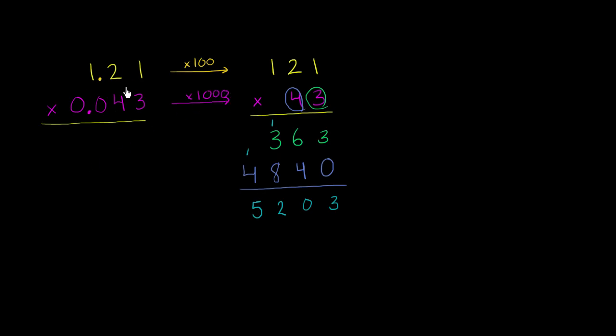So to go from this product to this product, we essentially multiplied by 100 and we multiplied by 1,000. So then to go back to this product, we have to divide.